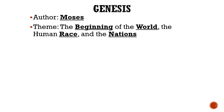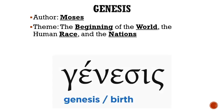The theme for the Book of Genesis is the beginning of the world, the human race, and the nations. Interestingly, the word Genesis is Greek, which means beginning. The Hebrew title for this book is Baraset, which means in the beginning.